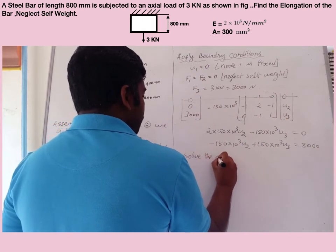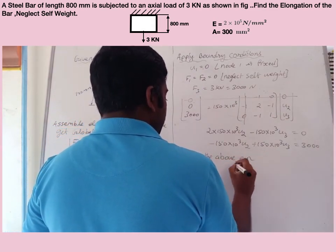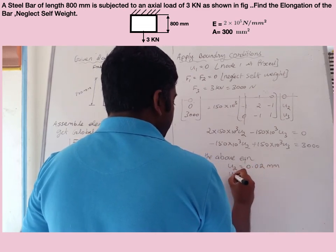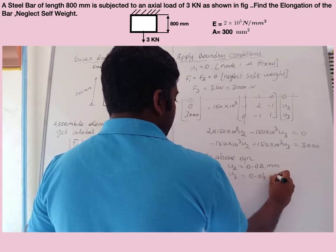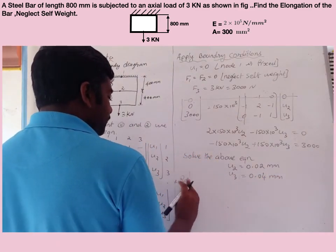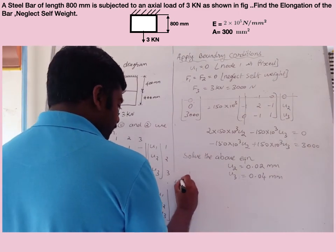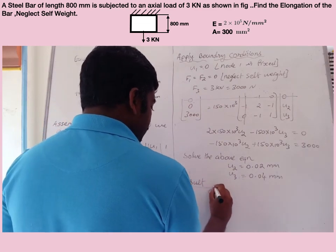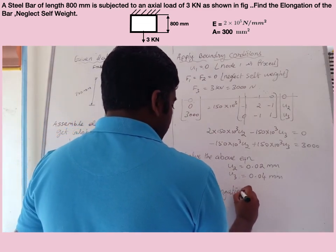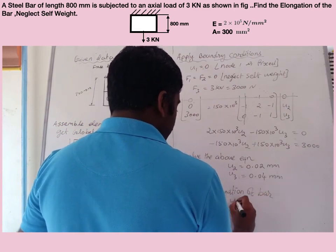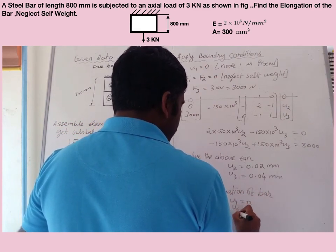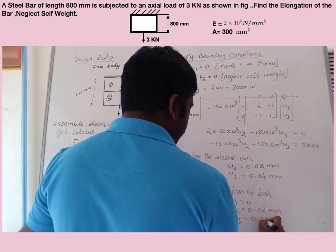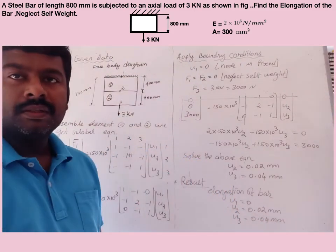Solving the above equations, you get U2 equal to 0.02 mm and U3 equal to 0.04 mm. Result: elongation of bar — U1 equal to 0, U2 equal to 0.02 mm, U3 equal to 0.04 mm. Thank you.